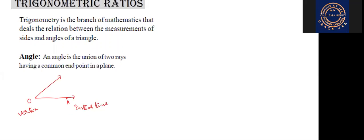And here I am denoting B. OB is called the terminal line. So the amount of rotation in anti-clockwise direction — that is what we are calling angle theta. The angle is the union of two rays having a common end point in a plane. The amount of rotation in anti-clockwise direction with respect to another line is called the angle.